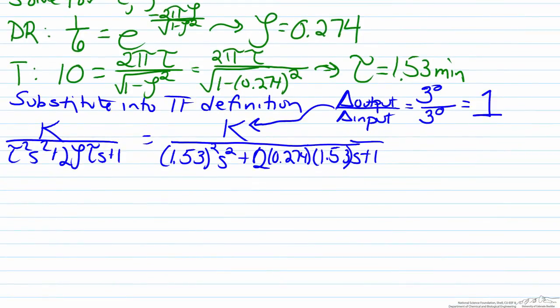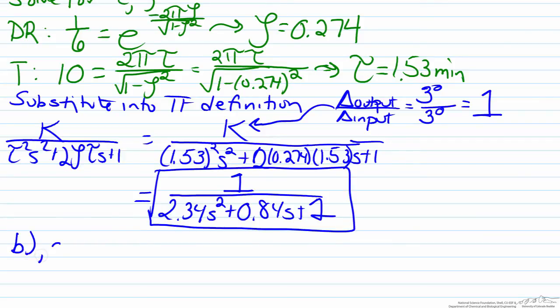So if we substitute in and multiply out our values here we end up with our final transfer function. Parts b and c are asking for the max temperature and the corresponding time.